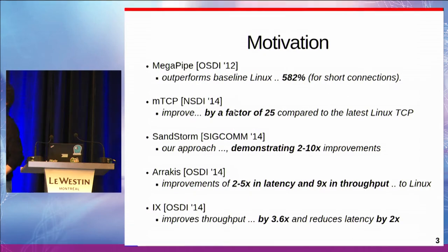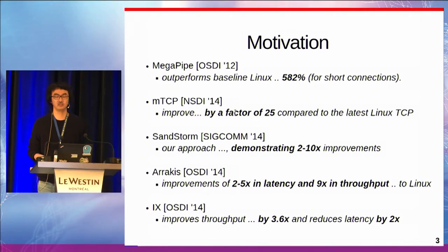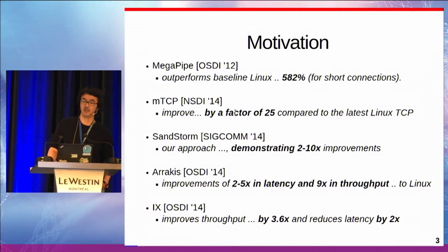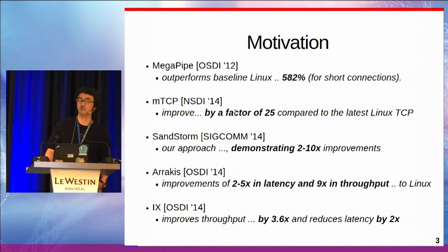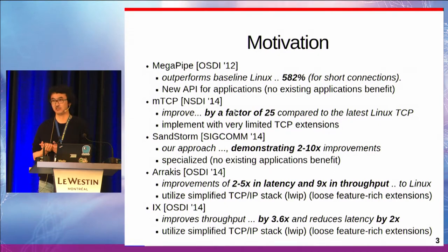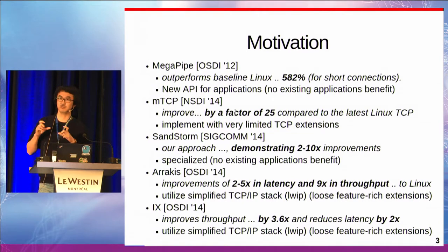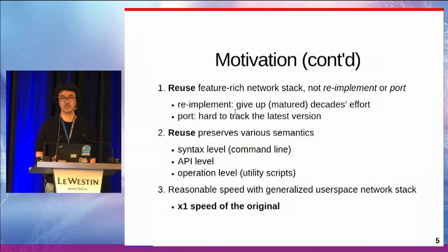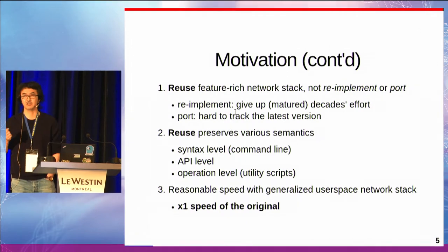The motivation behind this work, at least for me, is to tackle the existing user space network stack. There are many user space network stack implementations, and all of them have a very compelling number to improve network stack performance. But at the same time, they degrade many aspects of the network stack. Some lose existing application support because they don't have the POSIX API. Some only implement a partial part of the network stack, mainly supporting IPv4, for example. I don't want to do such things — I really want to reuse the mature network stack, even in user space.